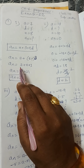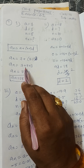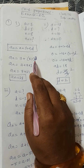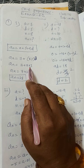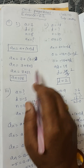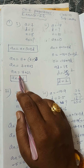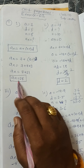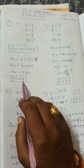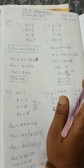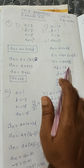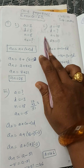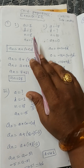So aₙ = 7 + 7 × 3 = 7 + 21 = 28. Next, the second bit is given.